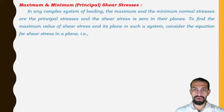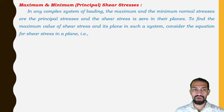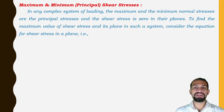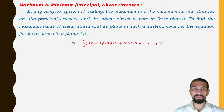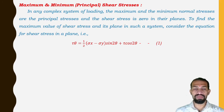In any complex system of loading, the maximum and minimum normal stresses are the principal stresses and the shear stress is zero in their planes. To find the maximum value of shear stress and its plane, consider the equation for shear stress: τ_θ = (1/2)(σ_x − σ_y) sin 2θ + τ cos 2θ. This is the equation for principal stress which we have already seen, so instead of σ we now take τ_θ.